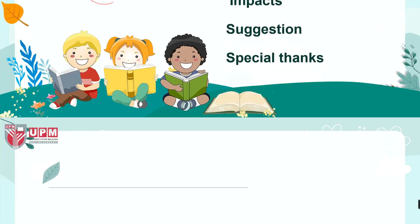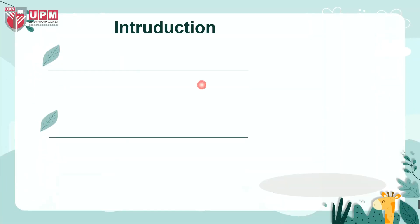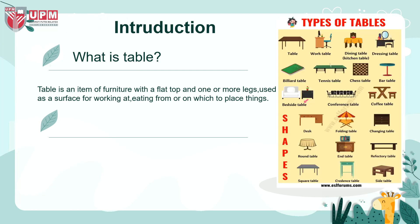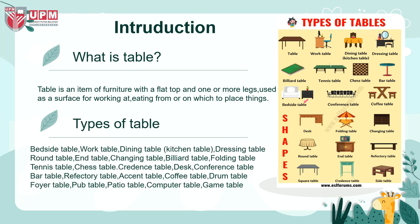What is a table? A table is an item of furniture with a flat top and one or more legs, used as a surface for working at, eating from, or on which to place things. Types of table include: bedside table, work table, dining table, kitchen table.